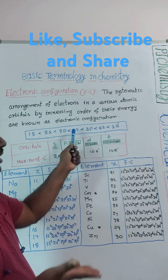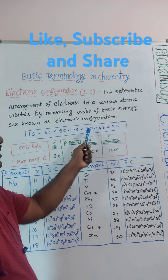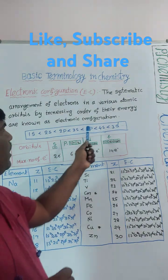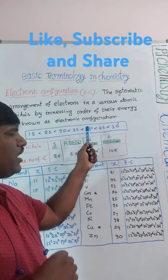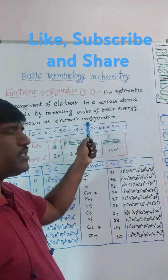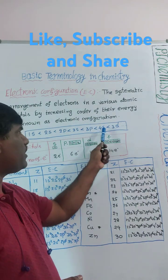3s2, 4 electrons over. 3p6, 18 electrons over like that. After 3p6, still we are having in potassium one more electron, total 19 electrons. Until 3p6, 18 electrons.